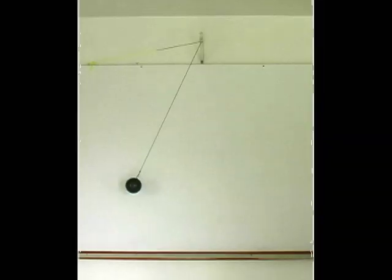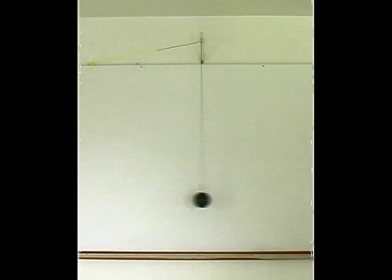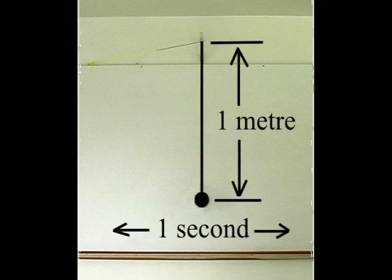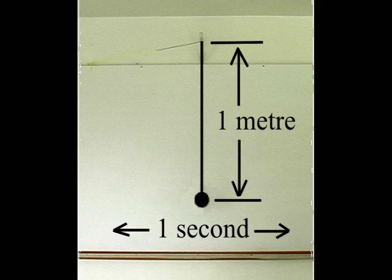It is possible by adjusting the length to create a pendulum that will take precisely one second to swing from one side to the other. Talleyrand proposed that a pendulum like this, a precision one second pendulum, be constructed, and that the length of this pendulum be used as the standard length, one meter. Time would define length. An elegant solution.